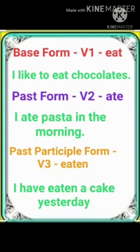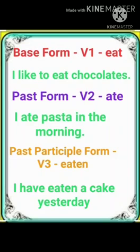In the first example, I have written 'I like to eat chocolates.' Here I use the base form of the verb — it's simple present tense. In present tense, we use the base form of the verb. In past, we change its form and use the second form of the verb. Then past participle — 'I have eaten a cake yesterday.' Here 'eat' changed to 'eaten,' and I have used present perfect tense. So form of the verb has a quality to change its form according to time.